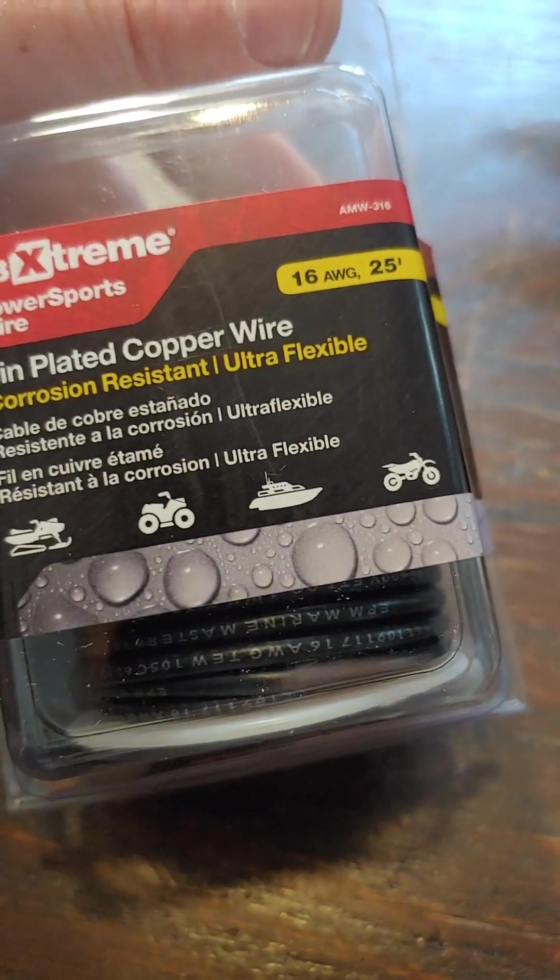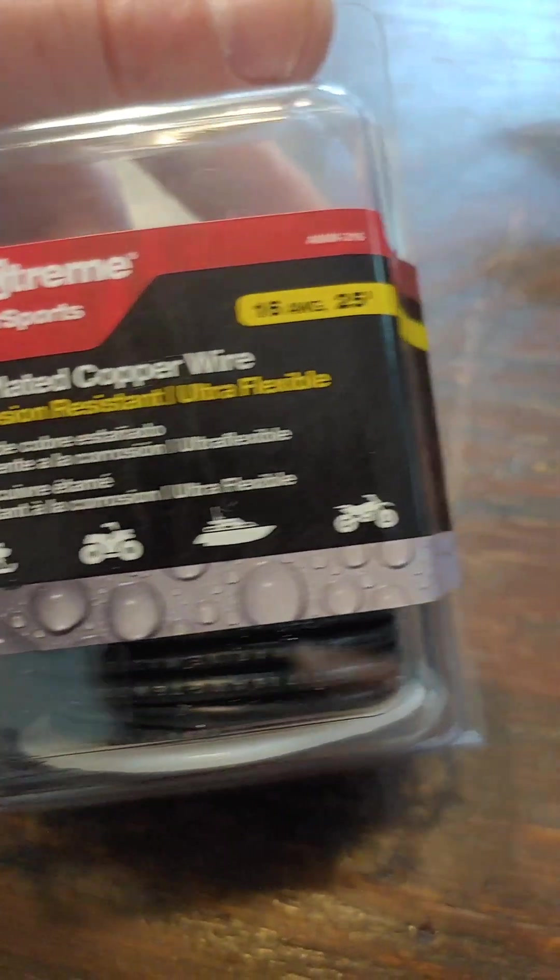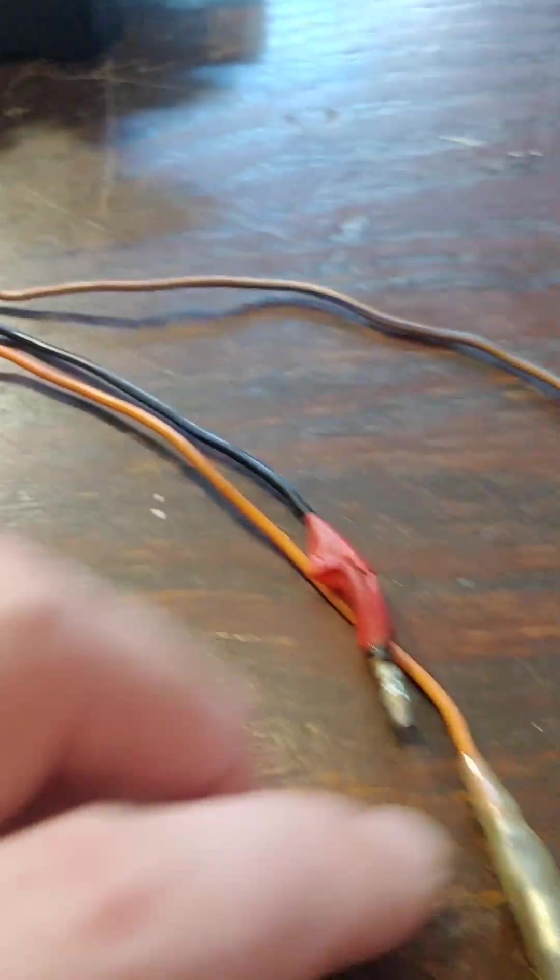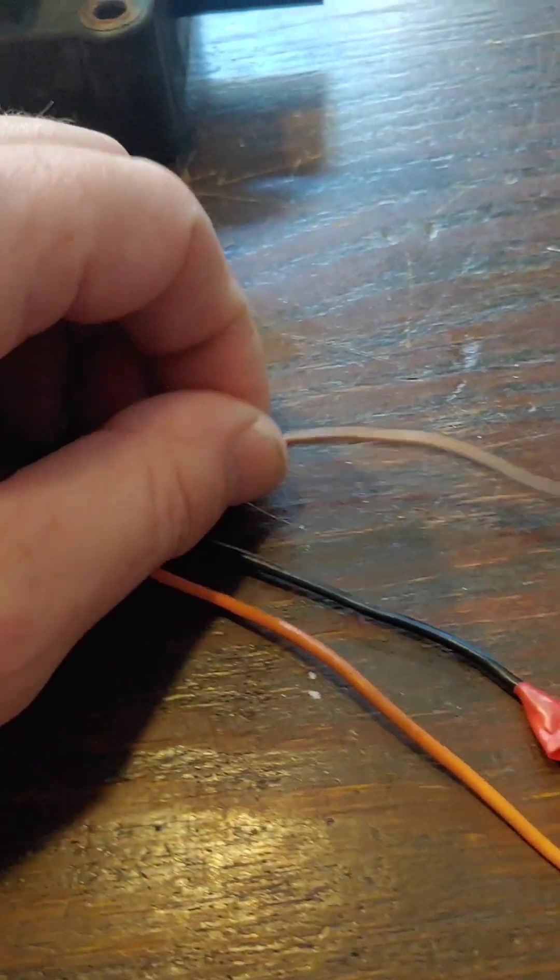So I went and got myself some 16 gauge wire here, braided copper wire, and I'm going to go ahead and remove these, solder in some fresh wire with proper connections and get rid of this limiting factor.